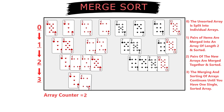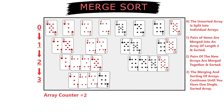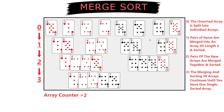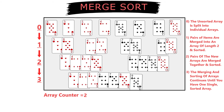Lastly, we do the final merge by creating one array with all 8 cards and sorting those together. Once we have a single array with all items, we have worked our way out of the recursion calls and now have a sorted array.